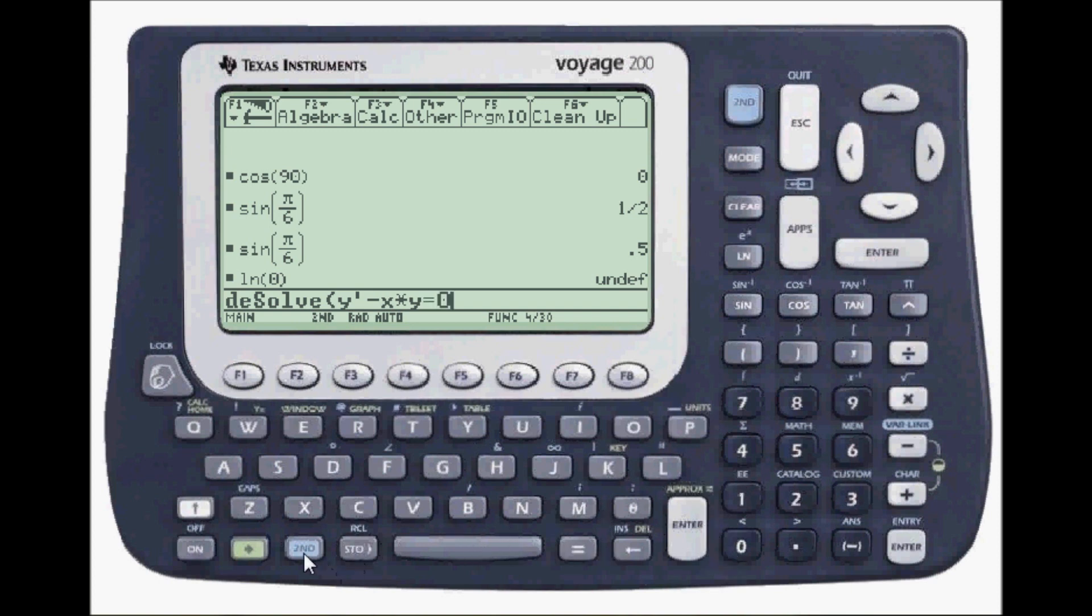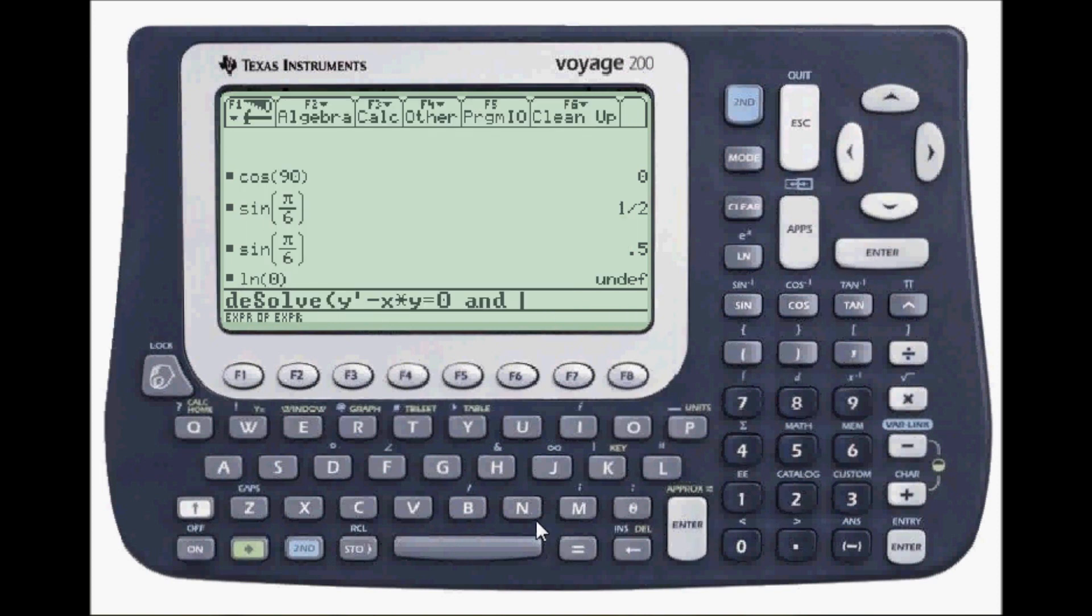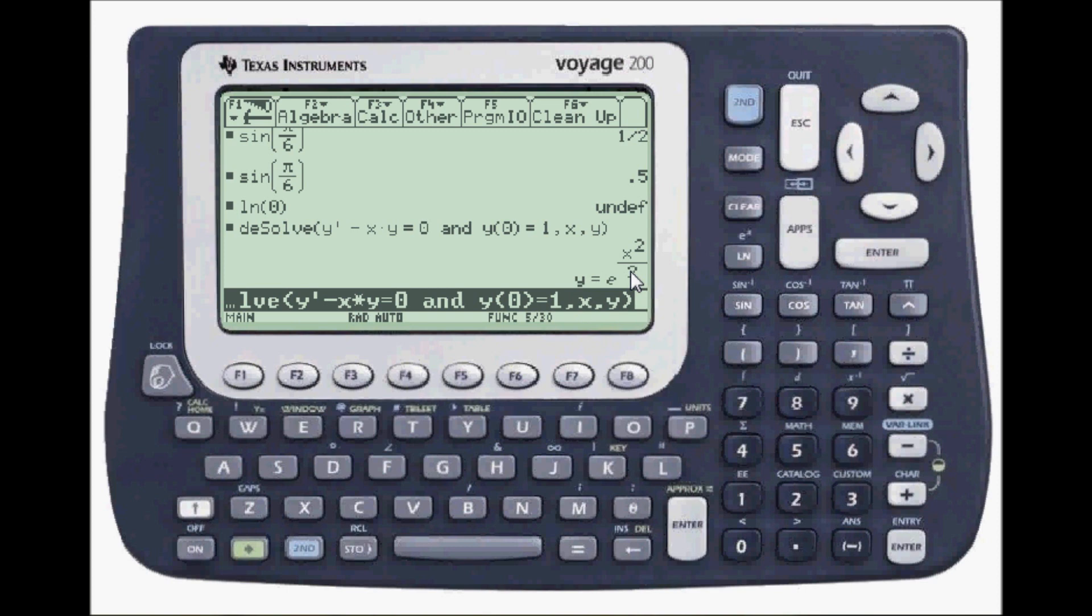And an initial condition. So catalog for and. Y of zero. Y of zero is equal to one. And then tell the independent and independent variables x and y. Press enter. And here's the answer.